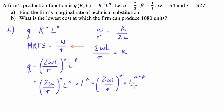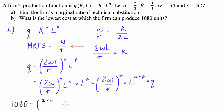Once I've got this, I plug in the variables. Our output must be 1,080, W equals $4, and R equals $27. So 1,080 equals (2 times 4 over 27) to the power of 2/3 times L to the power of alpha plus beta. Since alpha is 1/3 and beta is 2/3, alpha plus beta equals 1, so L is simply to the power of 1.